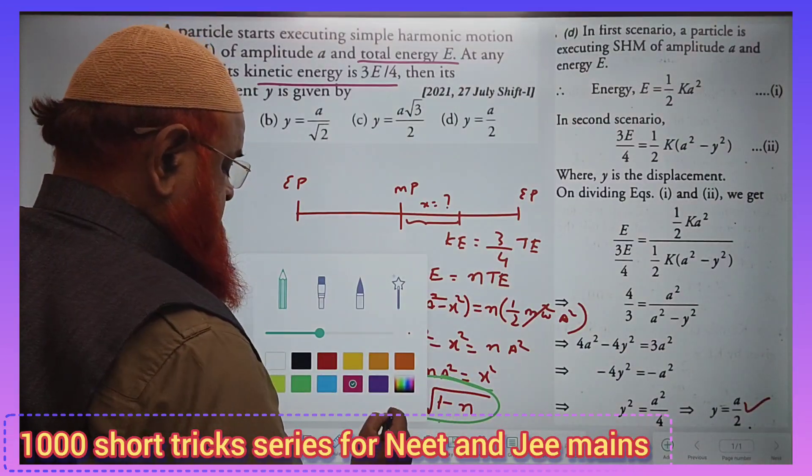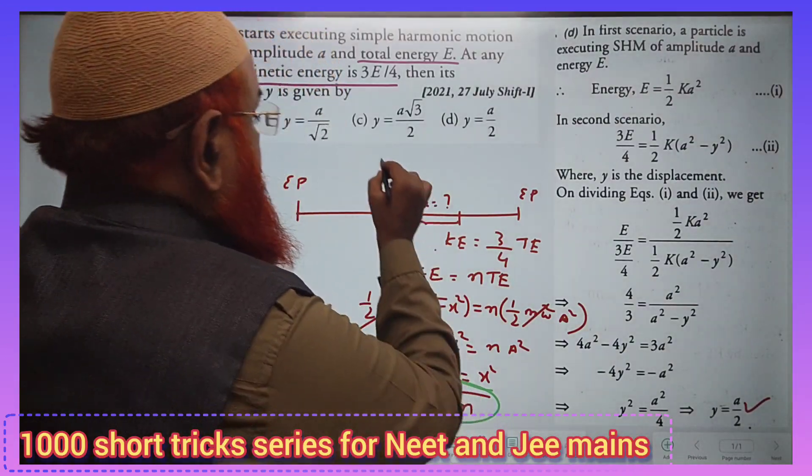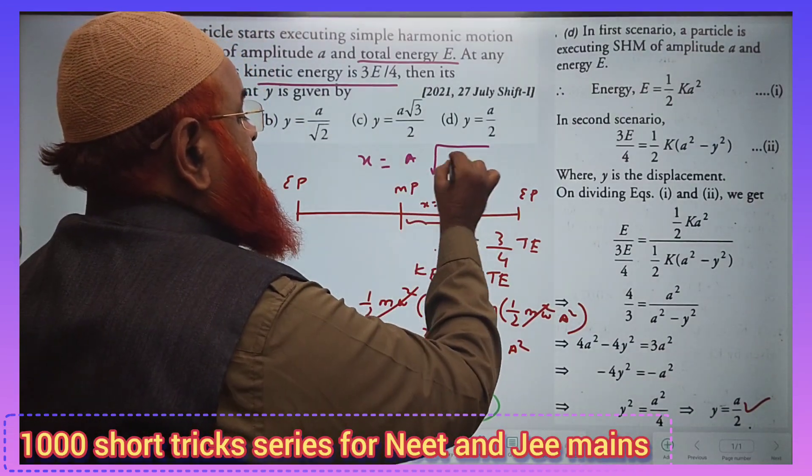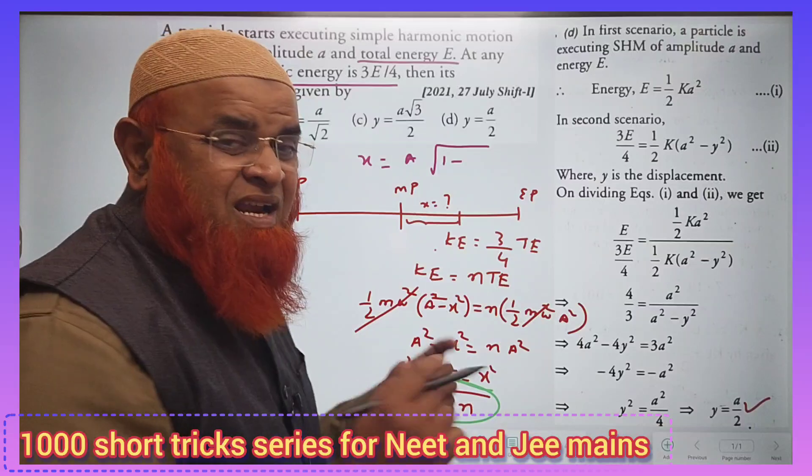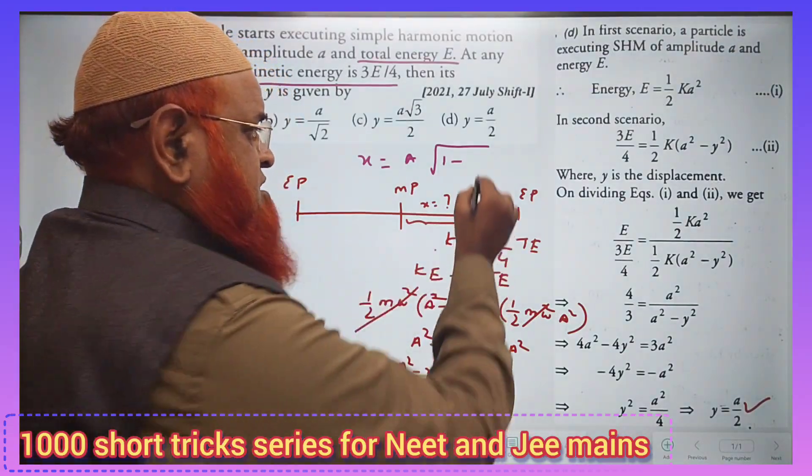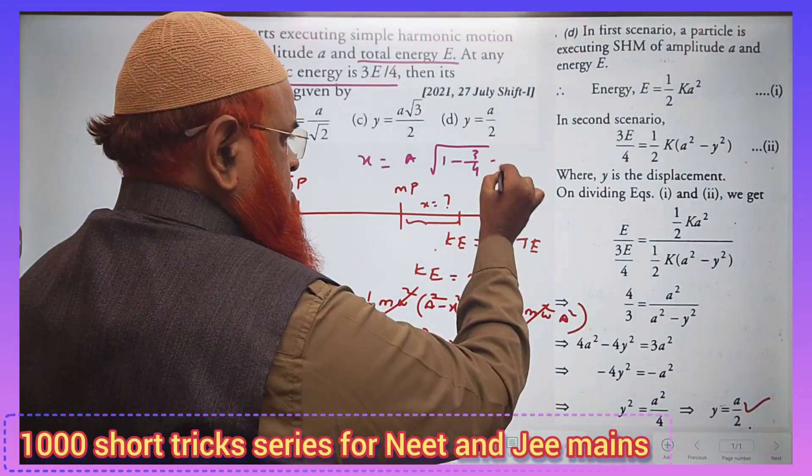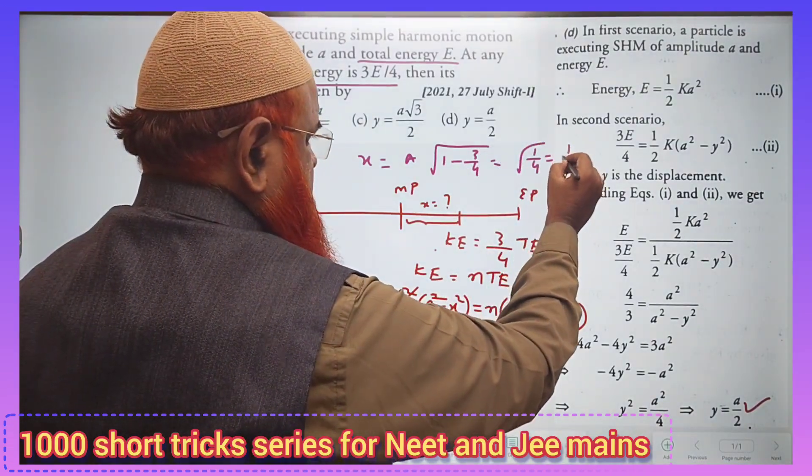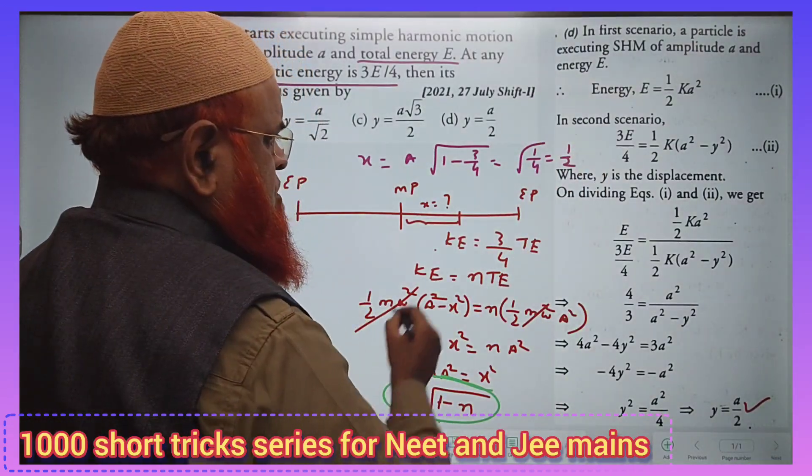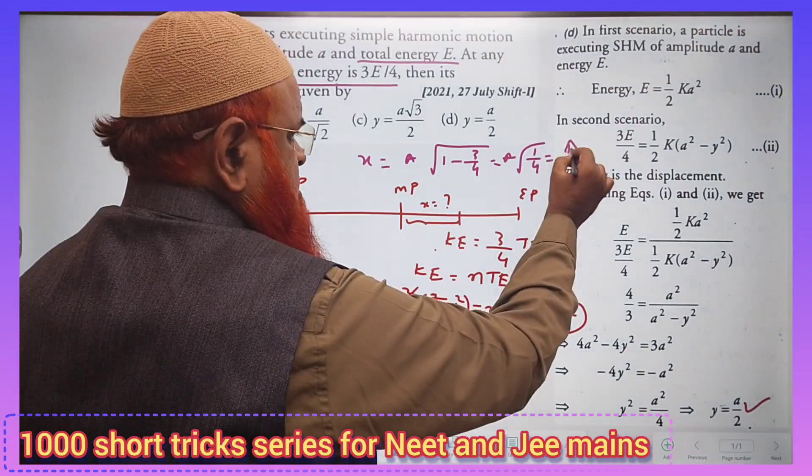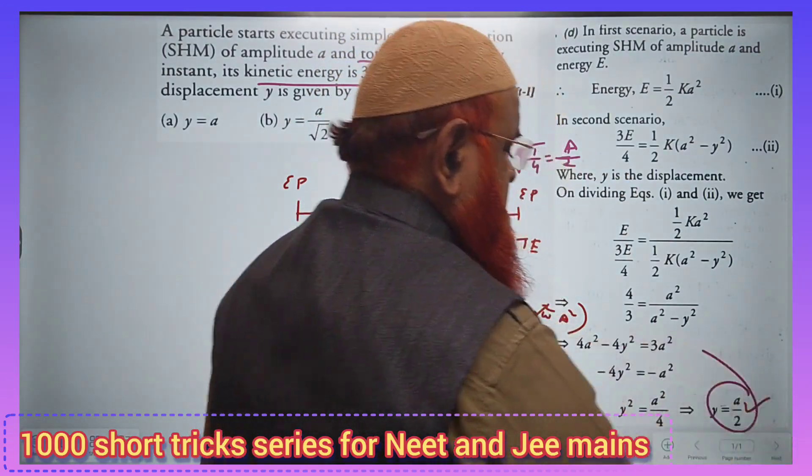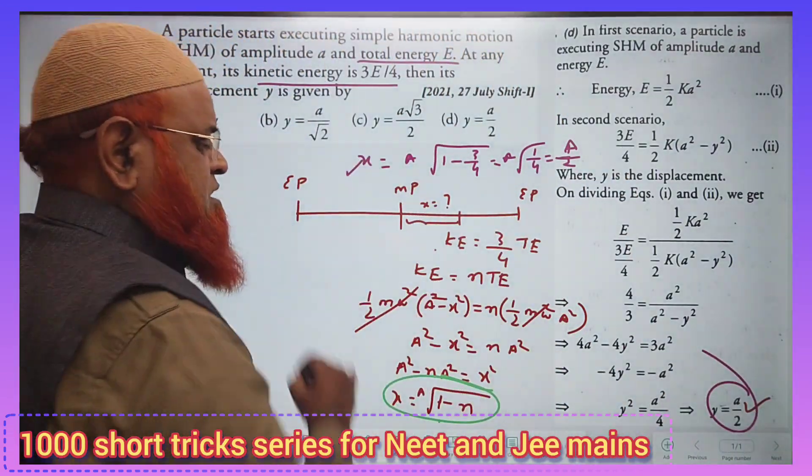So here x is equal to a square root of 1 minus n. What is n according to the question? 3 by 4. That's it. So 1 minus 3 by 4 gives you 1 by 4 which is equal to 1 by 2. So a is present, so a by 2 here. That's it. Got the a by 2 answer within just a single step method.